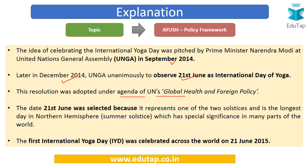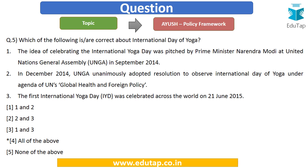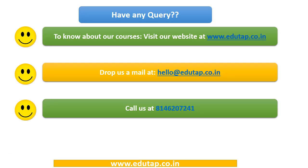The resolution was adopted under the agenda of UN's global health and foreign policy. June 21st was selected because it represents the summer solstice — one of the two solstices and one of the longest days in the northern hemisphere — which has special significance in many parts of the world. The first International Day of Yoga was celebrated on 21st June 2015. All three statements are correct, so the answer is option 4: all of the above.